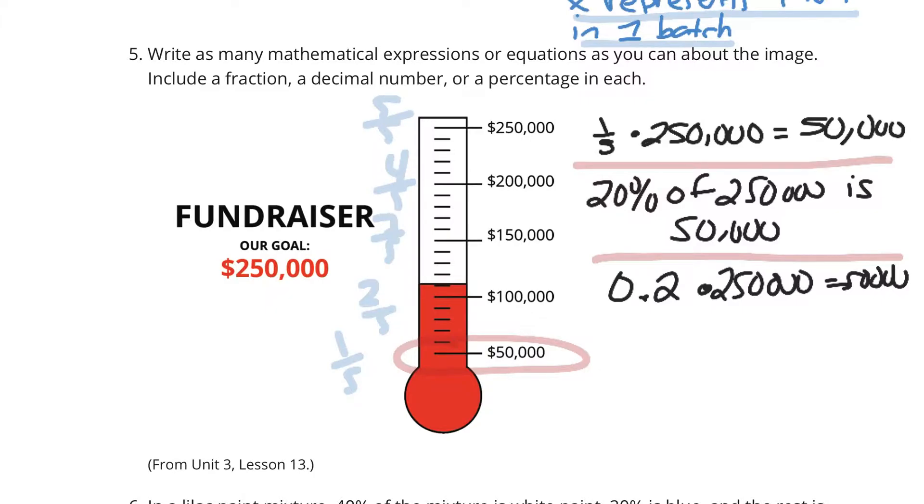20% of 250,000 is 50,000. And 2/10, which is 20% as a decimal, times 250,000 is 50,000.